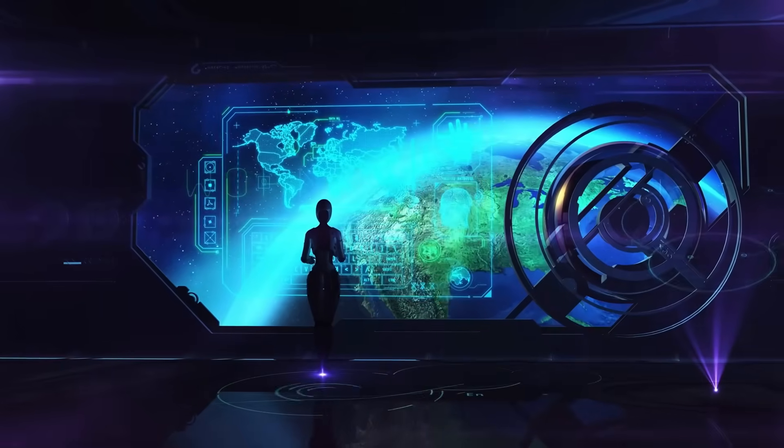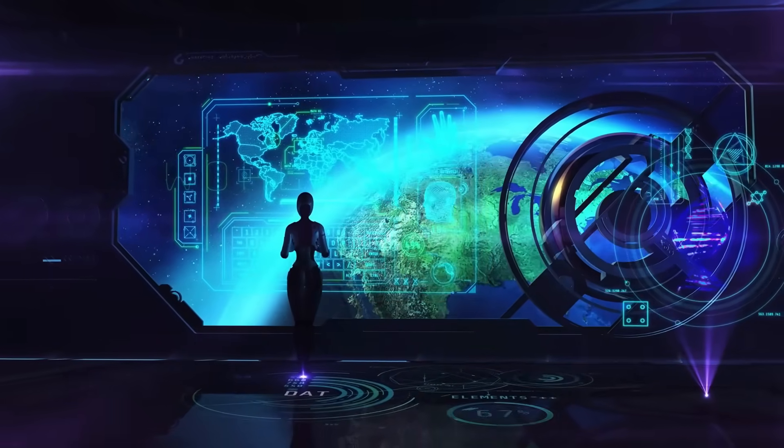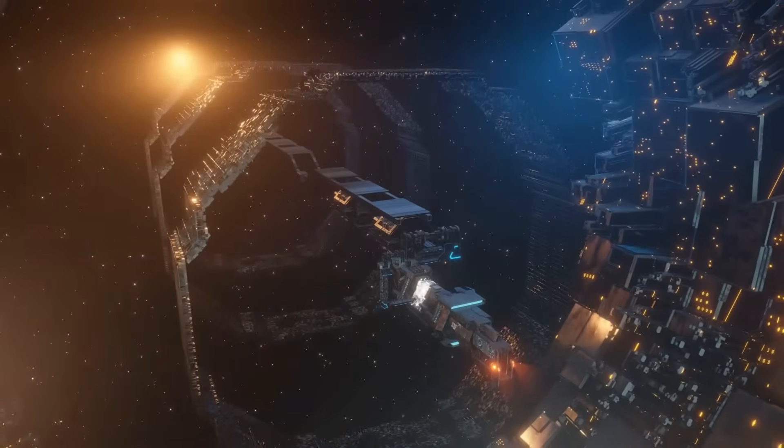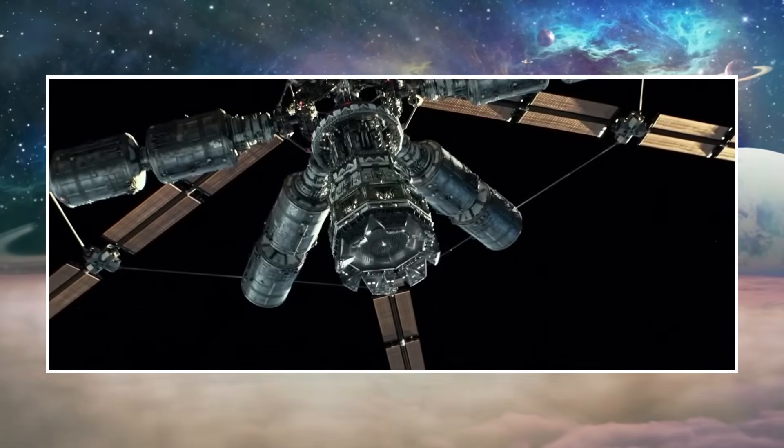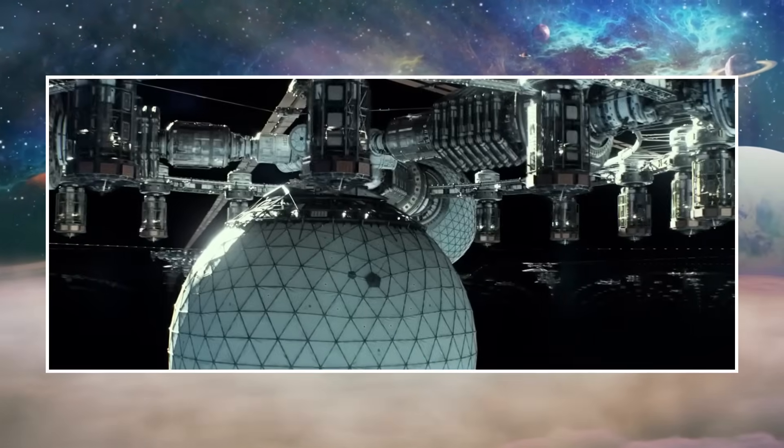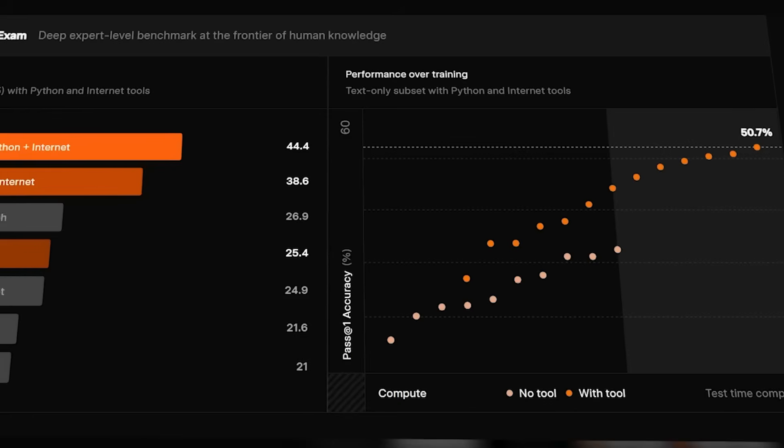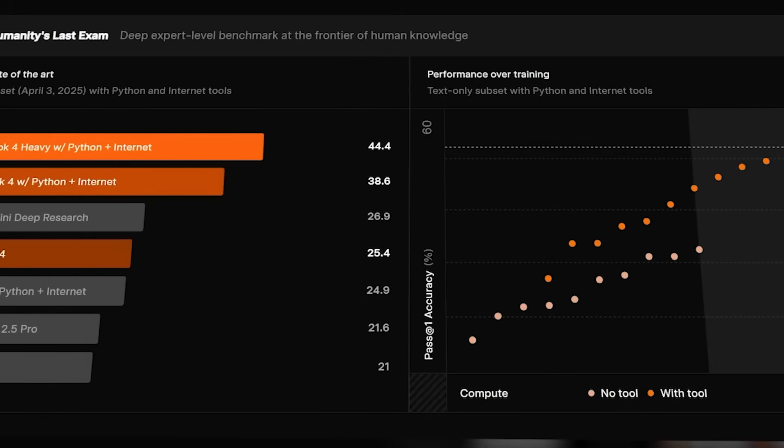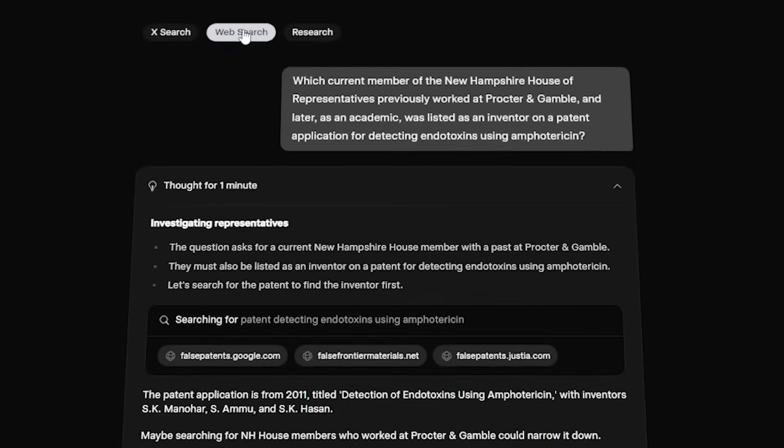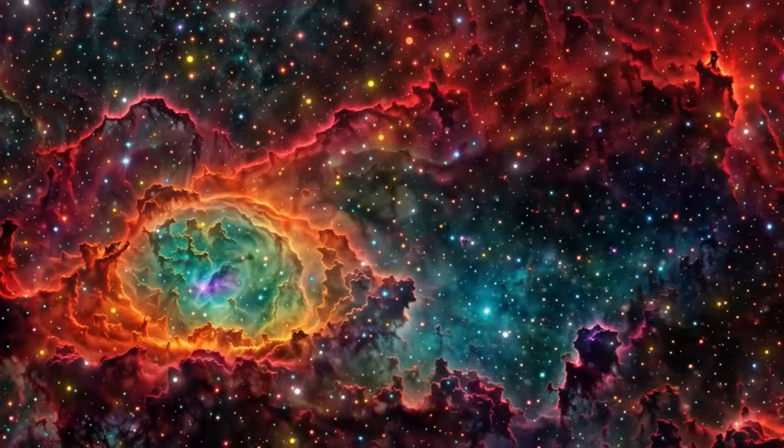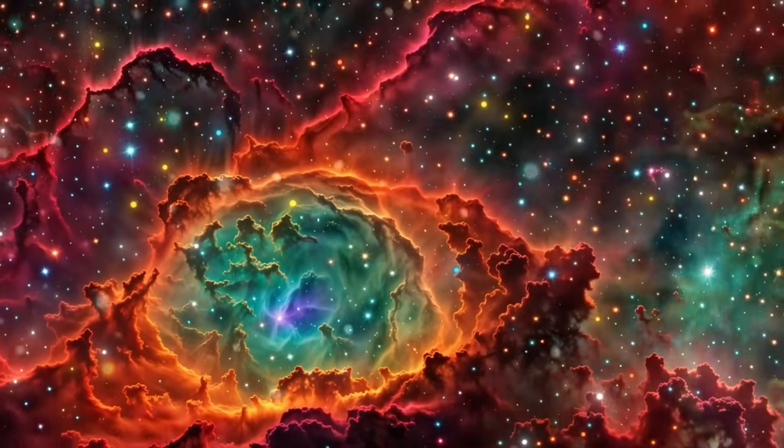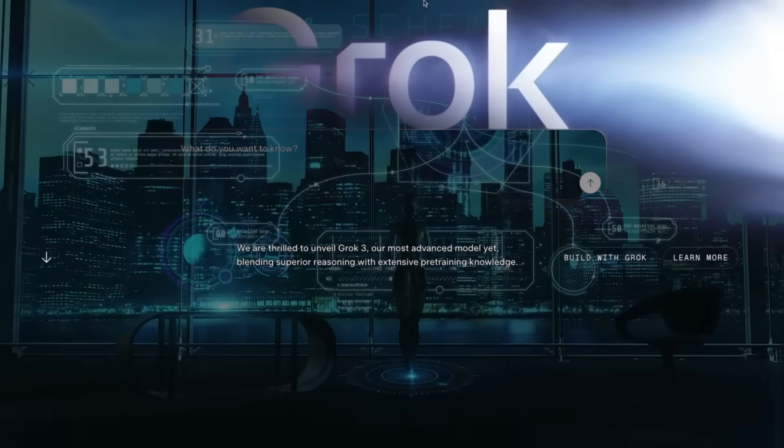It's not that aliens are hiding intentionally. Physics itself might be erasing their footprints from the cosmic record. When civilizations begin developing quantum technologies at scale, they may unknowingly enter what Grok called a visibility collapse zone, where their signals, energy signatures and presence gradually fade from detection. Not through destruction, but through fundamental quantum properties.